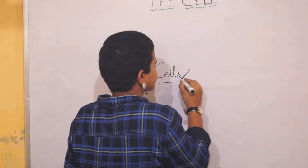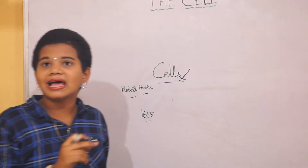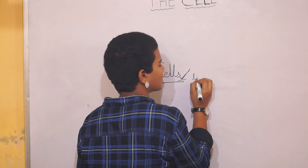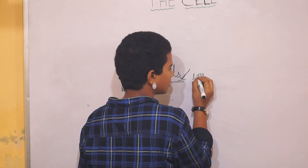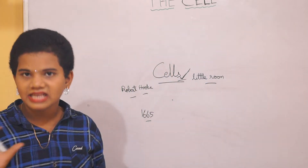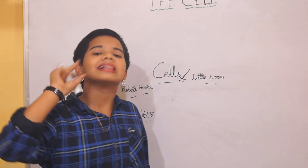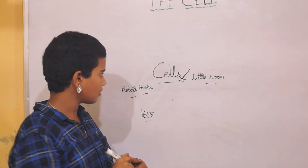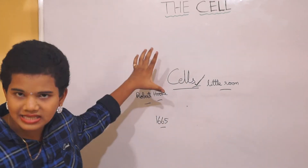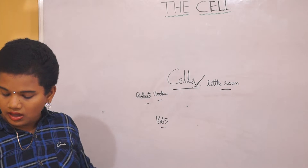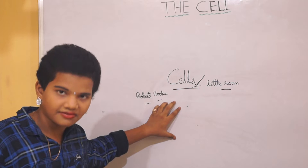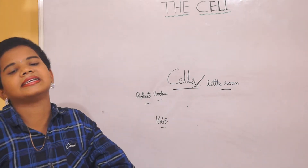Cell is a Latin word, meaning 'a little room.' He named those honeycomb structures as 'little rooms,' meaning cells. This is how Robert Hooke discovered the cell in the year 1665.